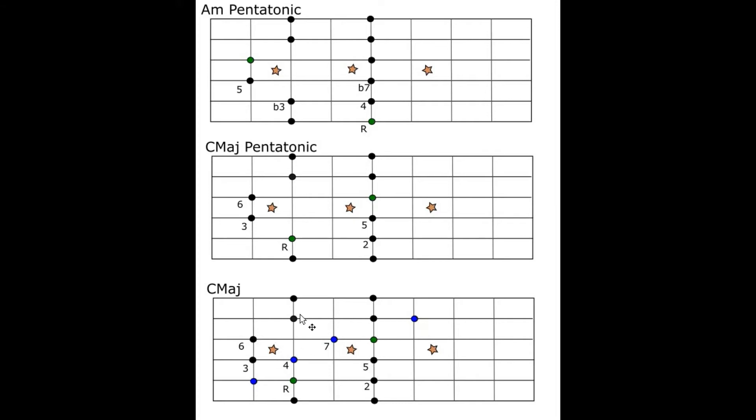You can see in this case because it winds up on the B string here it gets shifted down by one. And then we always wind up with one string with two notes on the string. And in this case since it's the E string it gets repeated on both the high and the low string.